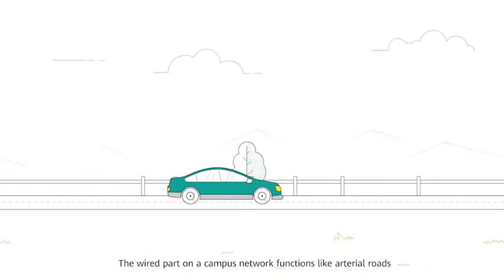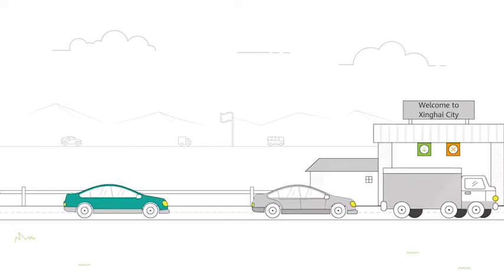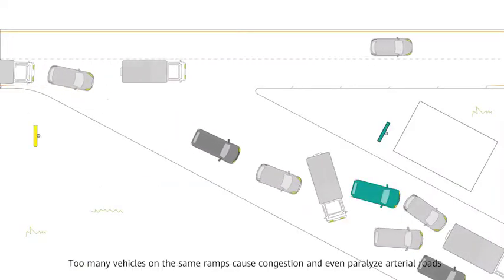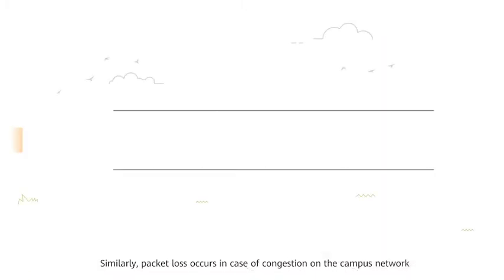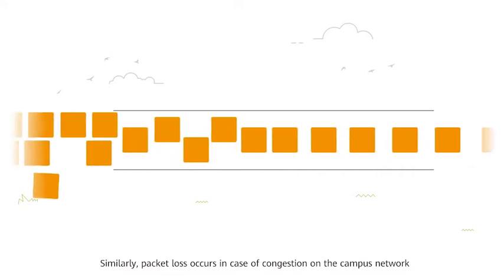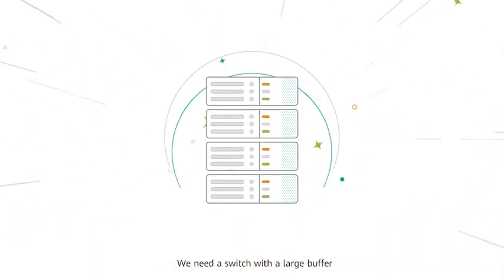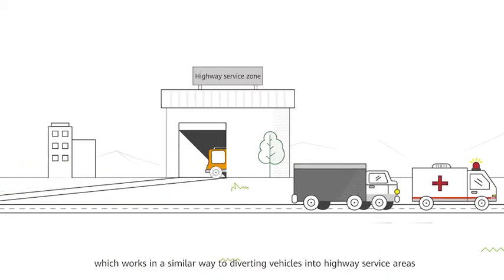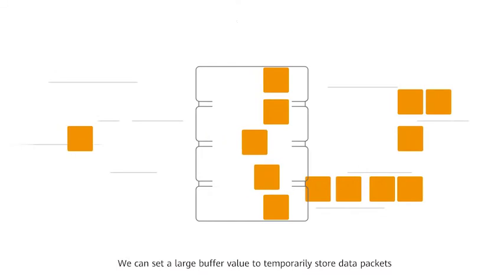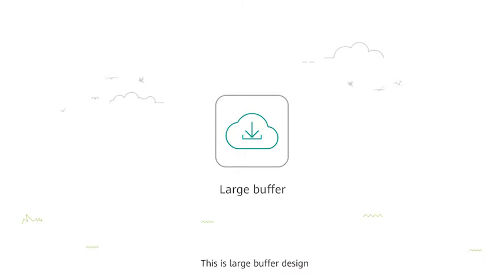The wired part on a campus network functions like arterial roads, while the wireless part works like on-off ramps. Too many vehicles on the same ramps cause congestion and even paralyze arterial roads. Similarly, packet loss occurs in case of congestion on the campus network. To prevent packet loss, we need a switch with a large buffer, which works similarly to diverting vehicles into highway service areas — we can set a large buffer value to temporarily store data packets. This is large buffer design.